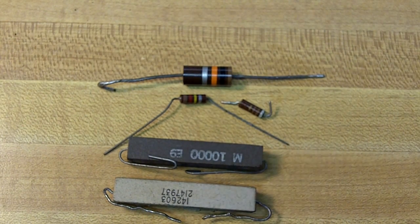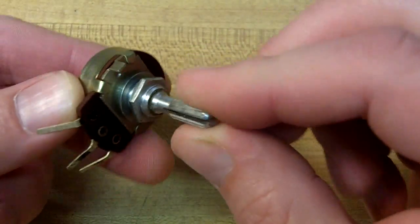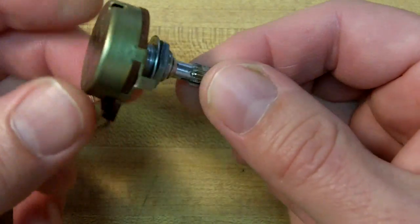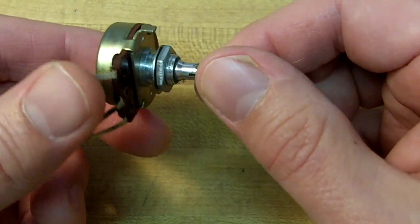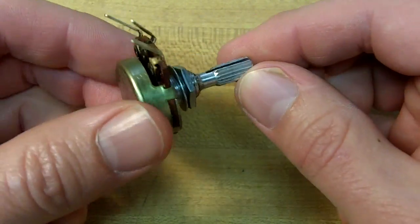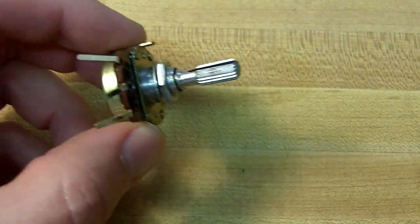There's also variable resistors, and they are used for volume controls as one thing as well as many other uses to control the resistance in a circuit. Typically this would be mounted in a radio with the knob on the front as a volume control. It's a variable resistor.